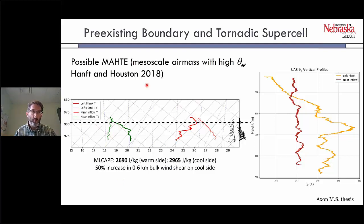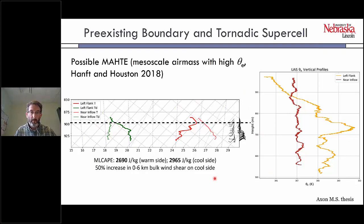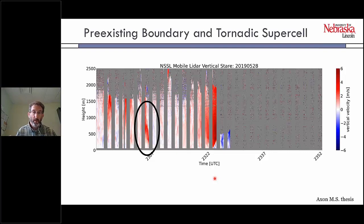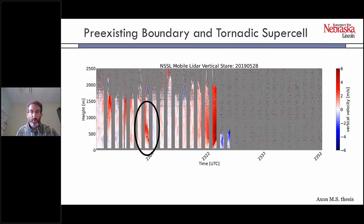This type of mesoscale air mass with high theta-E was examined in another case and appears likely to have been a moist absolutely unstable layer type feature. Not only did it have thermodynamic and kinematic characteristics that might be more favorable, but a pre-existing boundary sampled by the mobile lidar had vertical motion associated with it. The combination of favorable thermodynamics, higher CAPE, favorable kinematics, and localized vertical motion suggests this boundary may have been important for this storm — and that's one of the things Kristin is investigating.